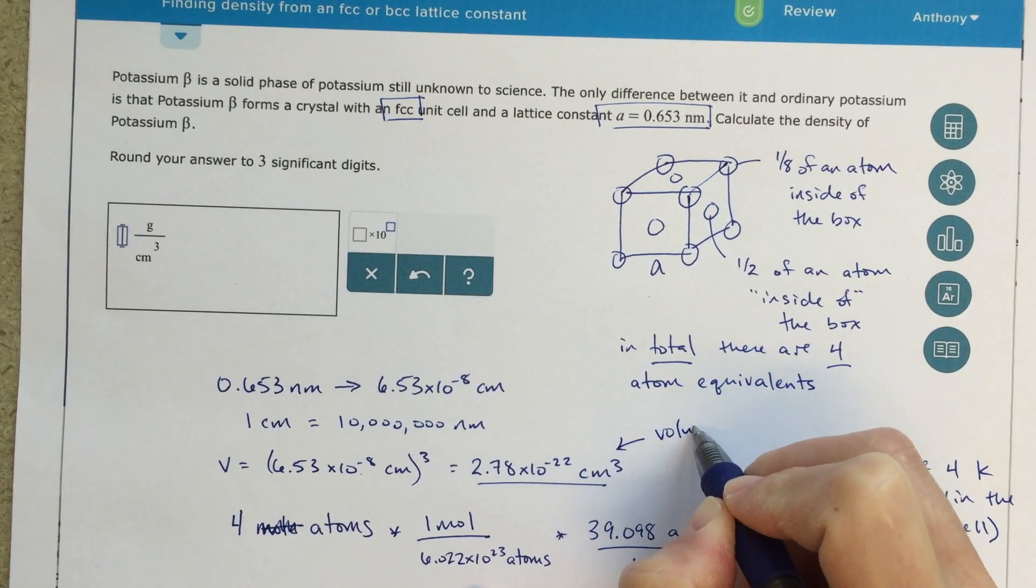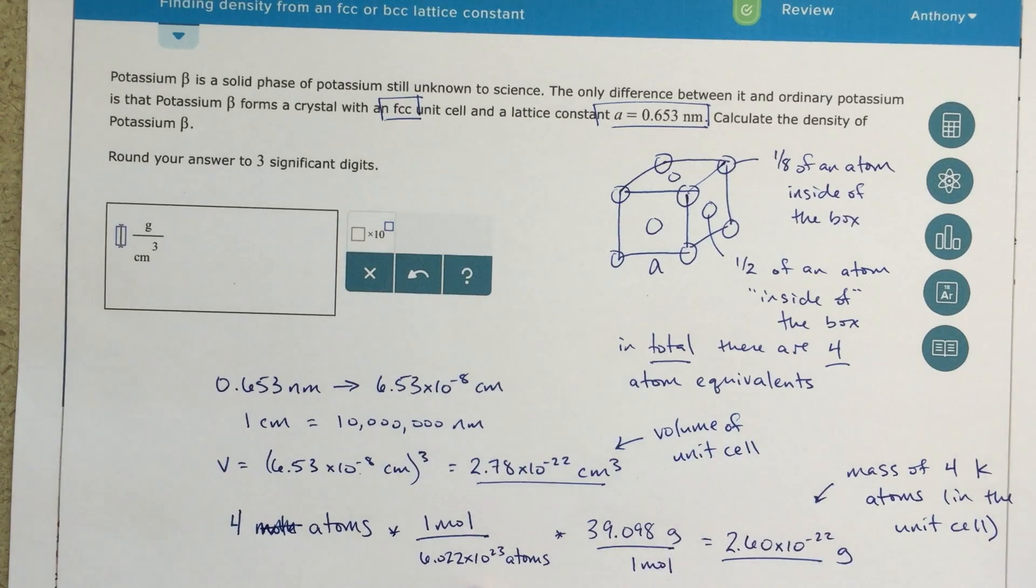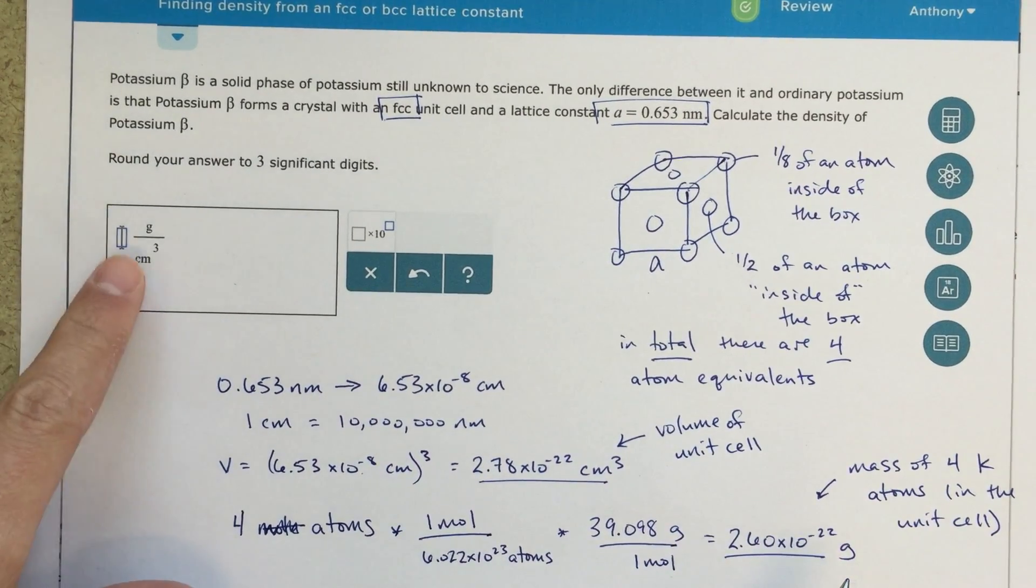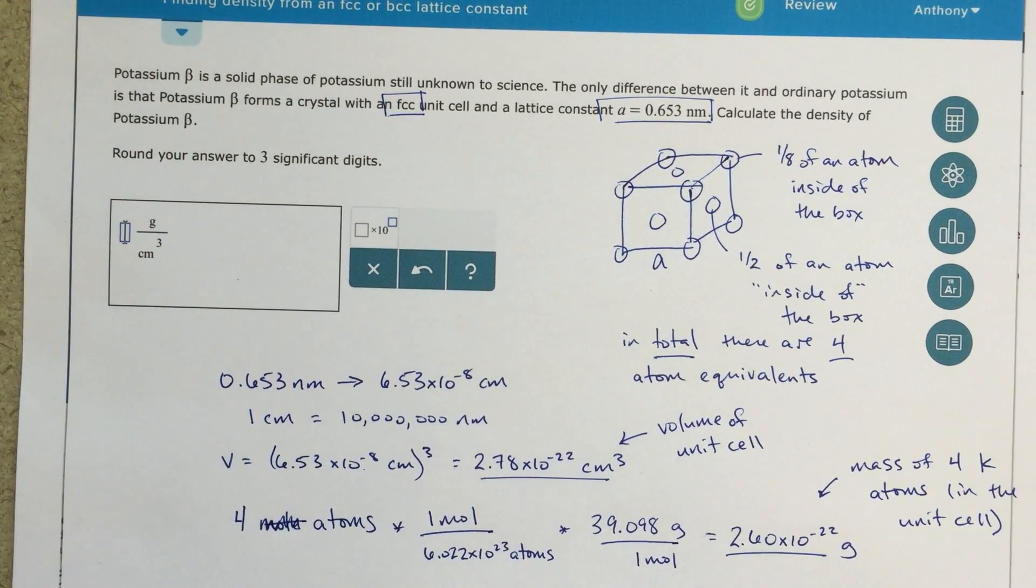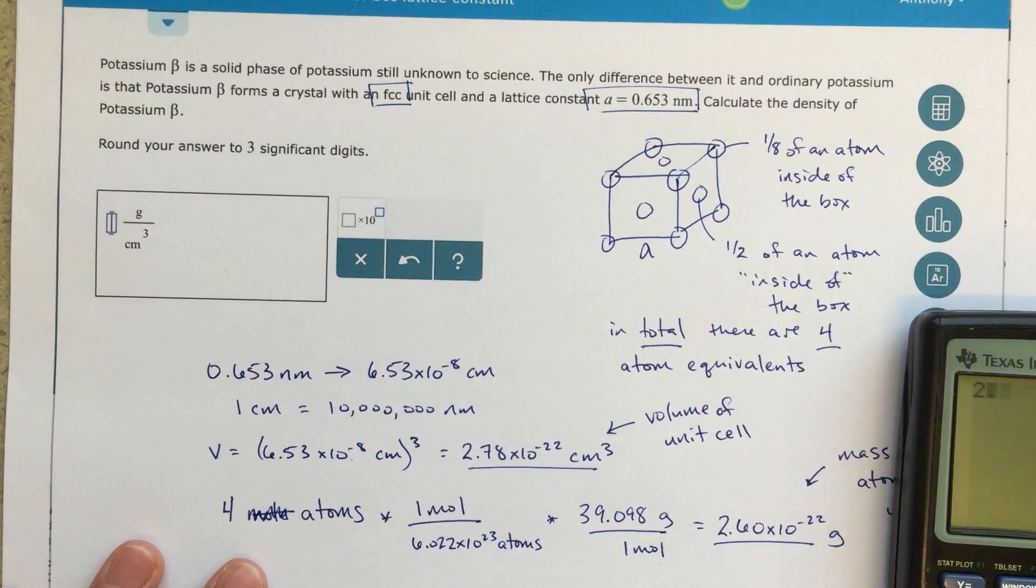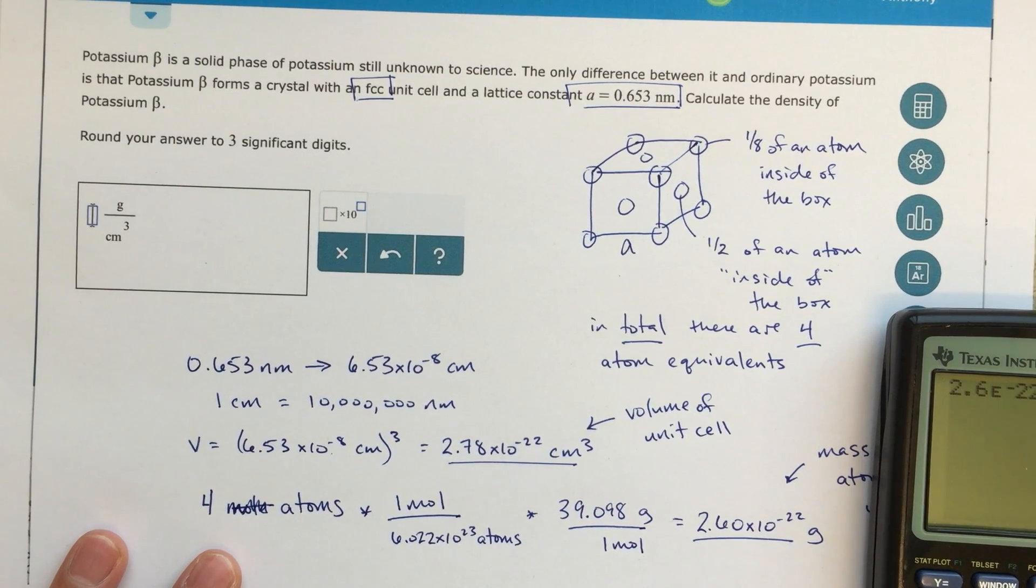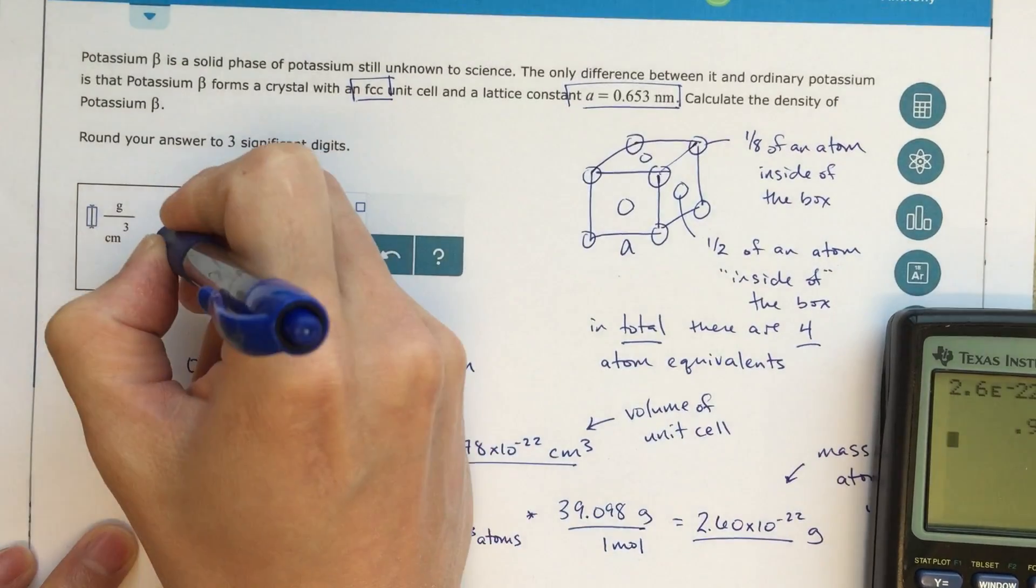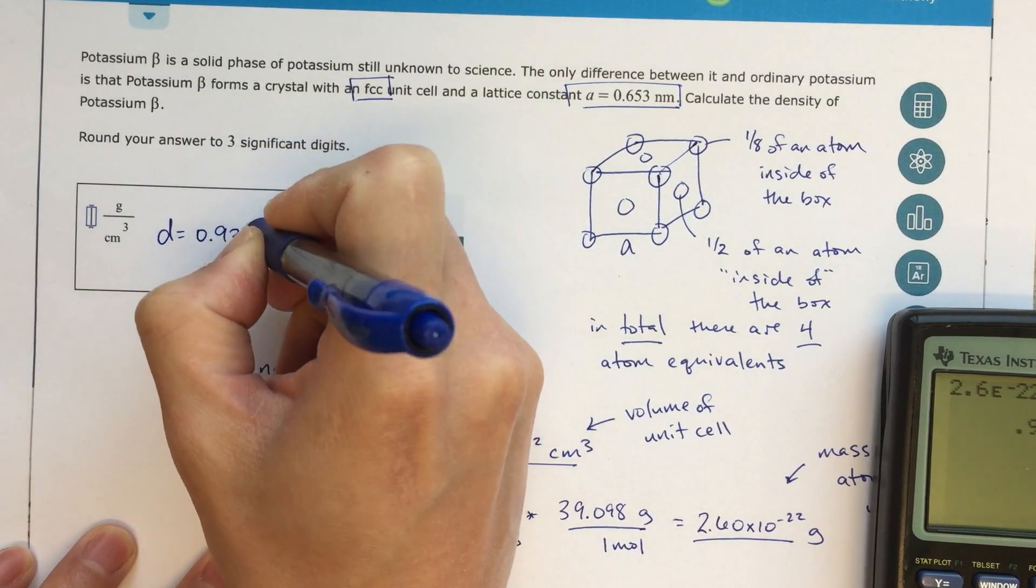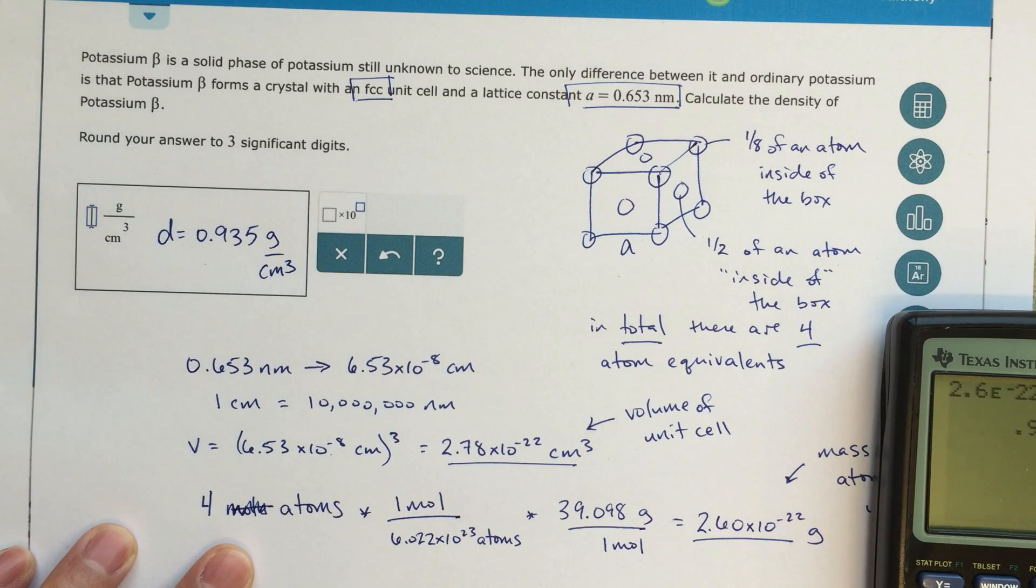And this is my volume of the unit cell. We need to be able to do this annotation to figure out what these values actually mean. If I know the mass and I know the volume, then I can solve for my density. If I calculate my density, that value is 2.6 E minus 22 divided by 2.78 E minus 22 - density equals 0.935 grams over centimeters cubed. I'm just taking my grams and dividing that by my volume, and that should be it. Alright.